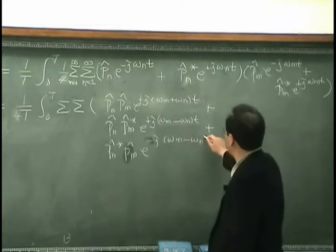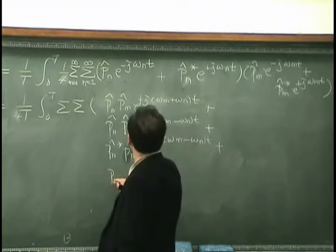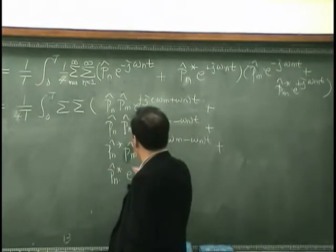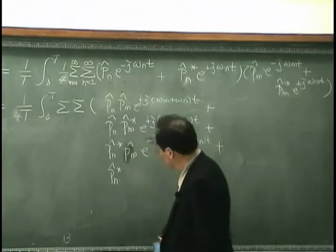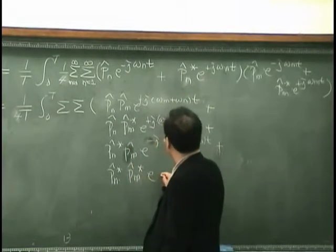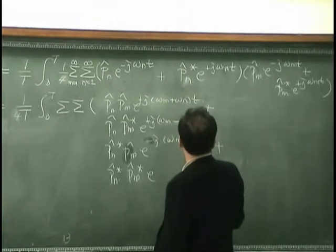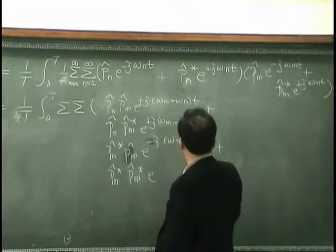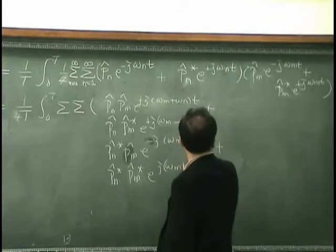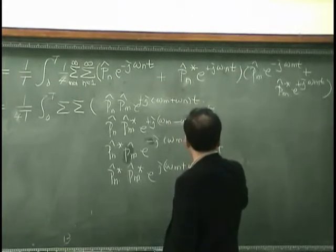Minus omega_m times t, and I have Pn times Pm hat conjugate with e^(j(omega_m + omega_n)t).